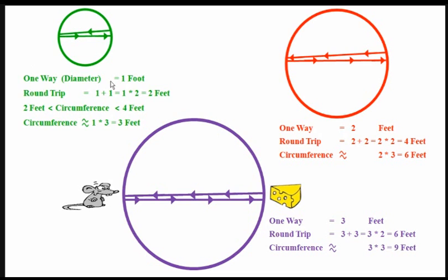Before I give you my answer, I want you to think about one thing. Can you come up with some lower boundary — a lower bound — on what the circumference must be? In other words, can you come up with a number that's so low that the circumference is guaranteed to not be less than that number? The circumference must be bigger than this lower boundary. Pause and ponder on that for a moment.